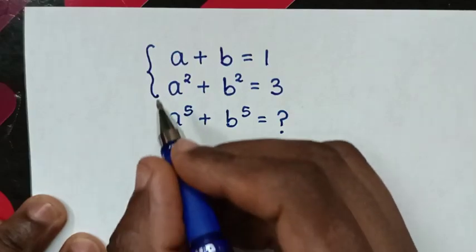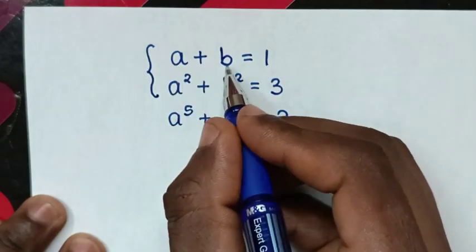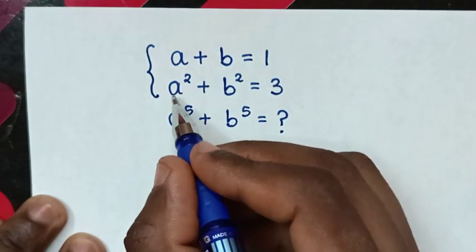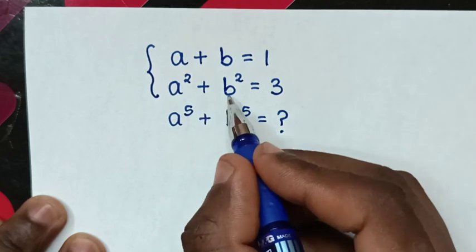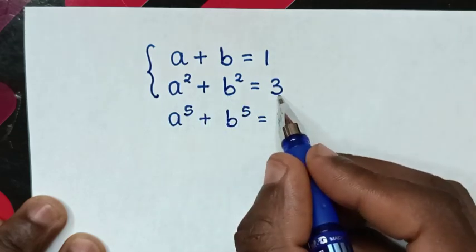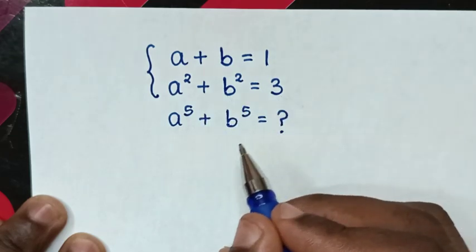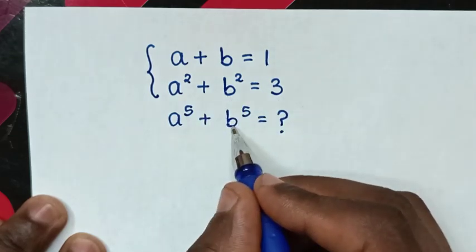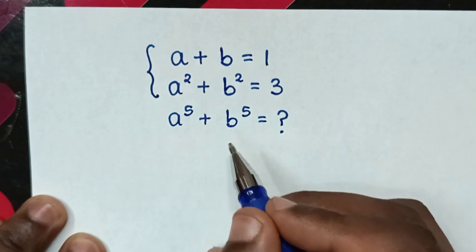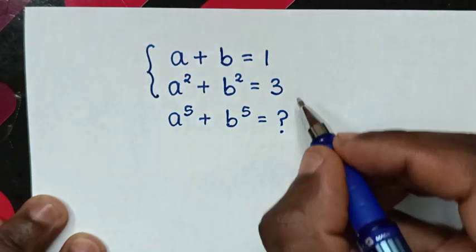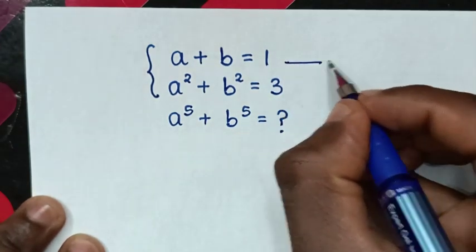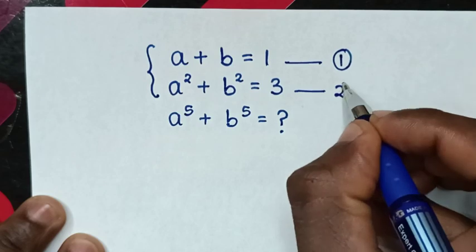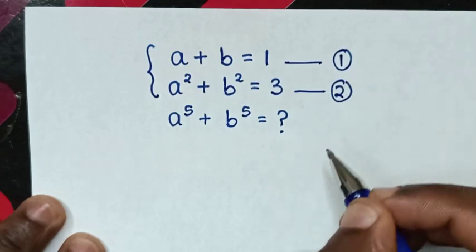How to solve: a plus b is equal to 1, a squared plus b squared is equal to 3, to find the value of a to the power 5 plus b to the power 5. We'll let the first equation be equation 1 and the second equation be equation 2.